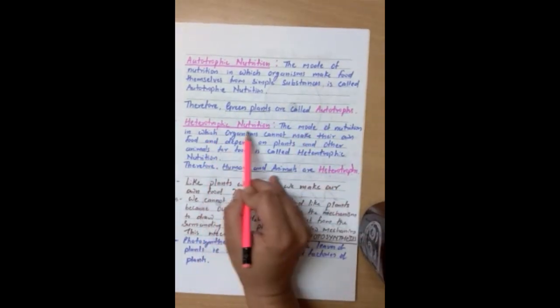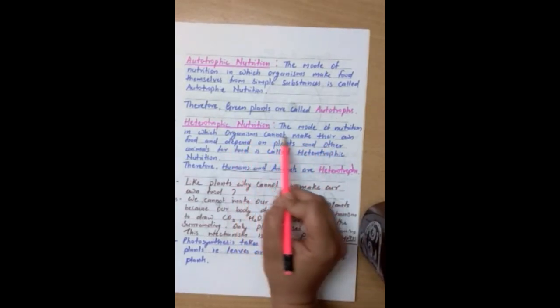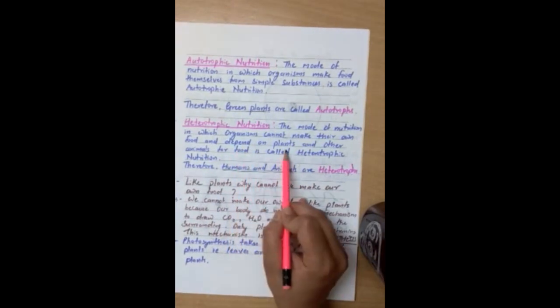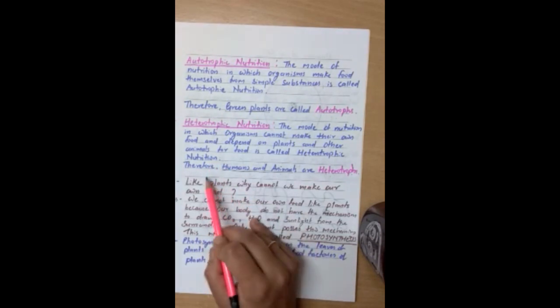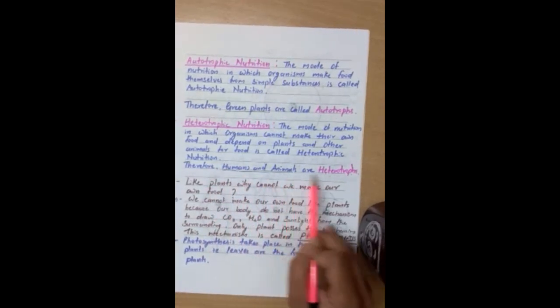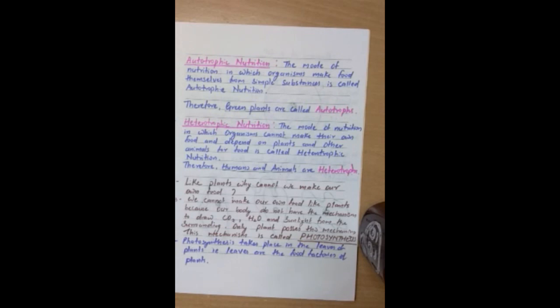Now, coming to heterotrophic nutrition. The mode of nutrition in which organisms cannot make their own food and depend on plants and other animals for food is called heterotrophic nutrition. Therefore, humans and animals are heterotrophs. Hetero means dependent on other. Trop means nourishment. We humans and animals cannot synthesize our food in the presence of sunlight. We cannot trap carbon dioxide. We cannot absorb water and mineral from the soil. We have to depend on other animals and plants for our food. That's why we are called as heterotrophs.